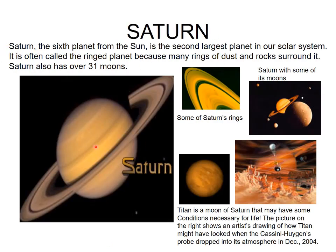Saturn is the second largest planet in our solar system and is often called the ring planet because it has many rings of dust and ice surrounding it. Saturn has not a single ring but many rings surrounding it, and it also has several satellites.